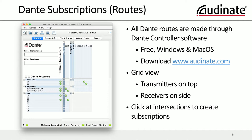For the nuts and bolts of it, let's talk about Dante Controller. Dante Controller is how you basically operate Dante and do all your routes. It's free software that we provide for Windows and Mac, downloadable at Audinate.com. When you're on a Dante system, you see a grid view with all transmitter channels horizontally and all receivers vertically. It's as simple as clicking at the intersections of those channels — you've made a subscription and audio starts to flow instantly.